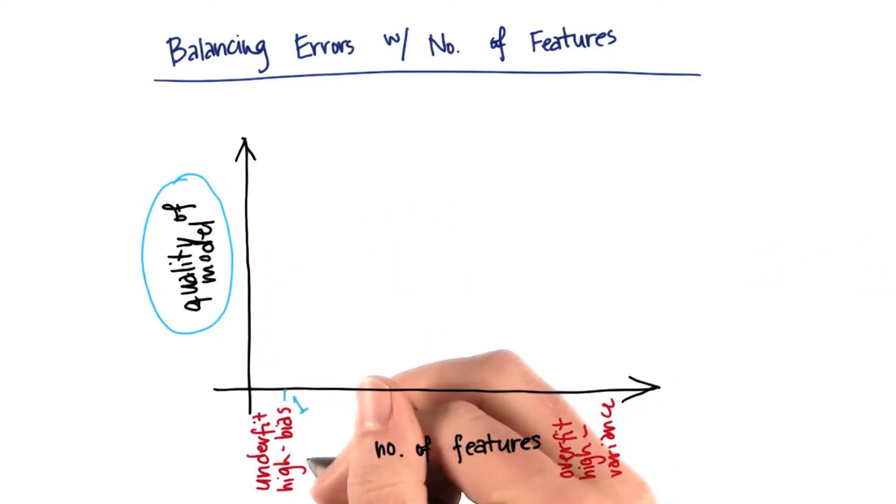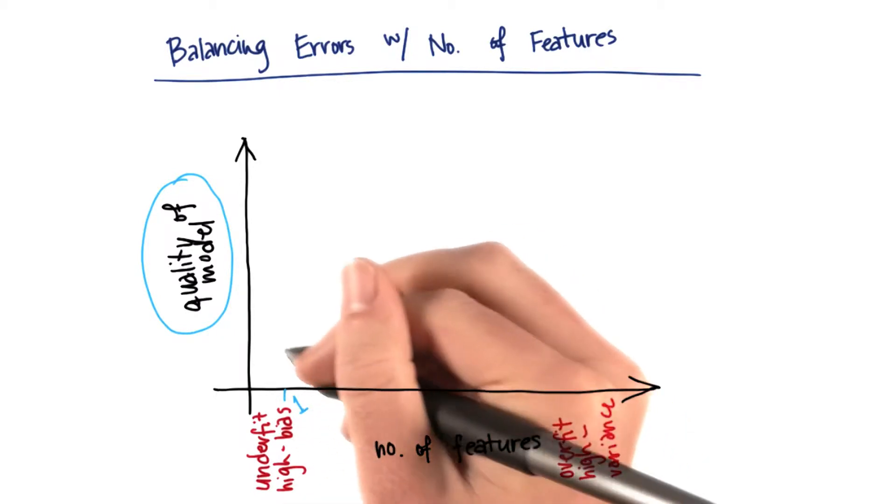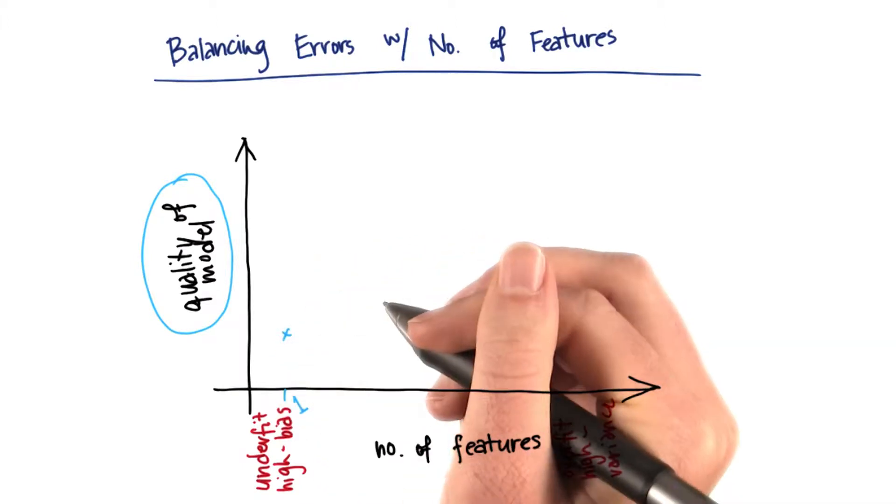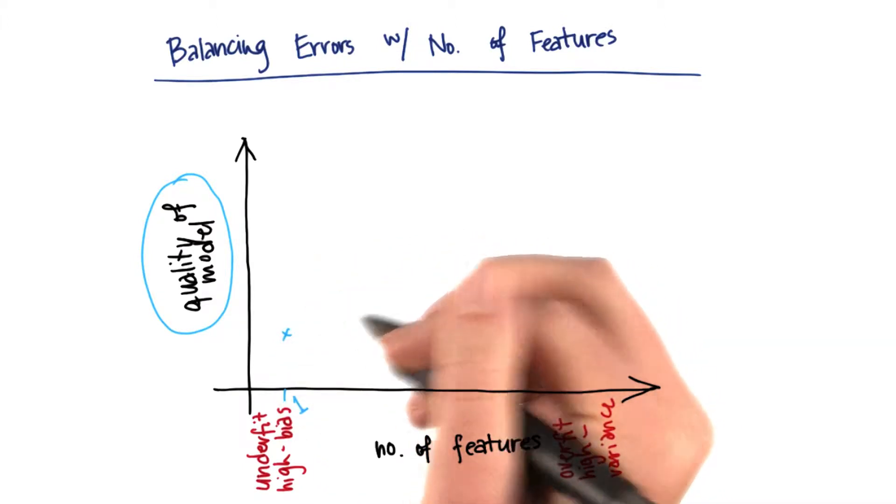Let's suppose I have only one feature in my model. Then I would say that the likelihood is pretty high that I'm underfitting my data, that I have something that's very high bias. So I'd say the quality of the model might be all right, but not as good as it could be.